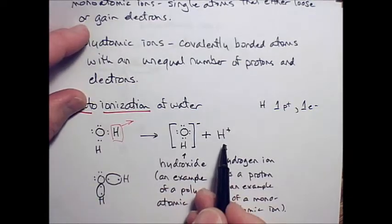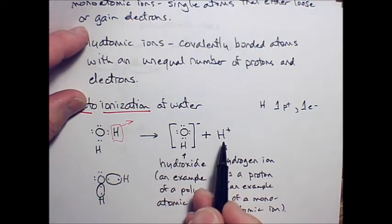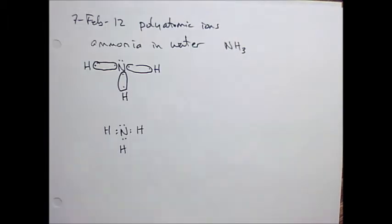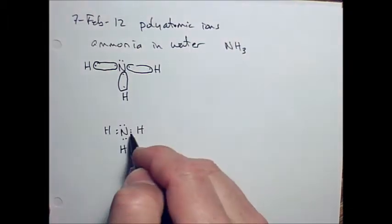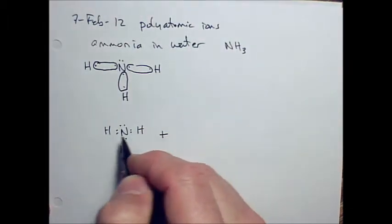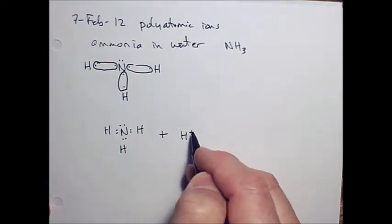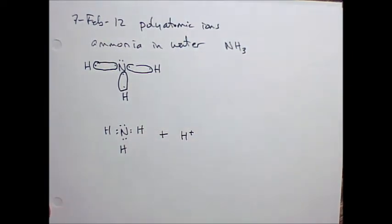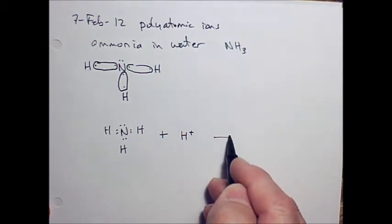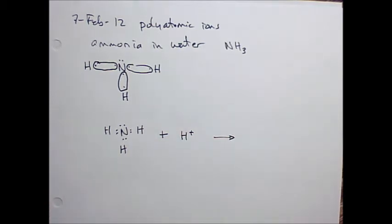In our autoionization example for water, we ended up with some extra hydrogen ions. So let's put this ammonia in water where there are a bunch of these hydrogen ions floating around in there.